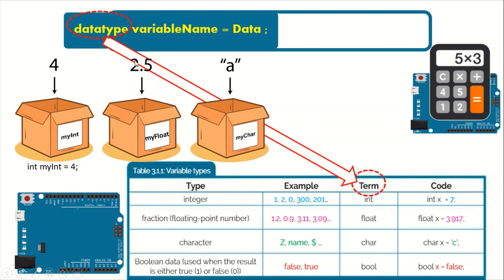This second box can hold only fractions — you cannot put an integer in it. This box is designed to hold only fractions. So to declare this line, 2.5 is a fraction, it cannot be int. If it's a fraction we have to write 'float', and then the variable name 'myFloat', then equals the data. So it looks like: float myFloat = 2.5.